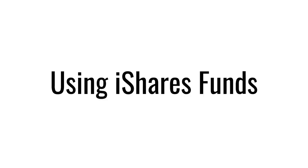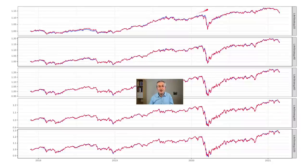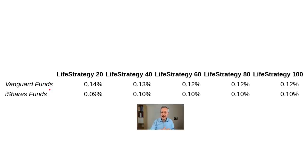You don't have to use Vanguard funds to reproduce those returns — you could also use iShares funds. There are seven iShares funds which work very well for reproducing those returns, and again the precise numbers will be available in a spreadsheet for Patreon supporters. You can see they track Life Strategy funds fairly well for all five funds. The irony is that iShares funds can do it cheaper — for Life Strategy 60, Vanguard funds cost 0.12% and iShares funds just 0.10%, so you can do it for less than half the original fee.